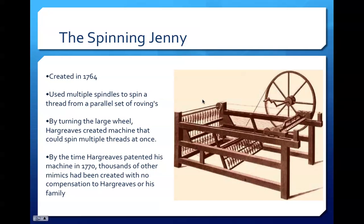The Spinning Jenny was formally created in 1764 and used multiple spindles to move threads from a parallel set of rovings. By spinning the wheel of the machine, the operator could increase their production rate of weaving tenfold. By the time Hargreaves got around to patenting this machine, thousands of others had mimicked it and created it without any compensation to Hargreaves or his family.